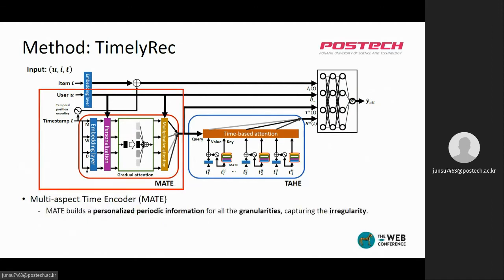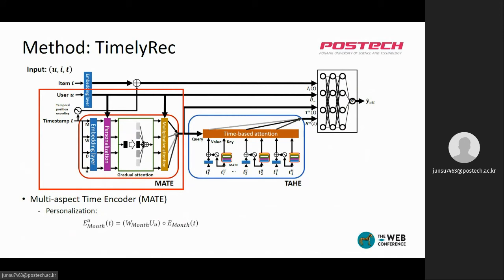Firstly, MATE builds personalized periodic information for all granularities capturing the irregularity. To take into account personalization, the embedding for each time slot is personalized using the user embedding. In this equation, E_U_month_T is the personalized month information of the target time T for user U.